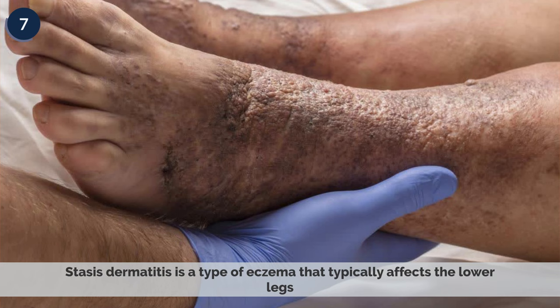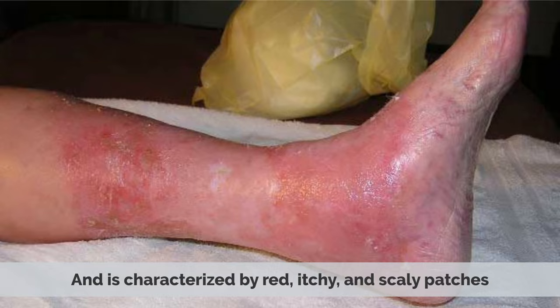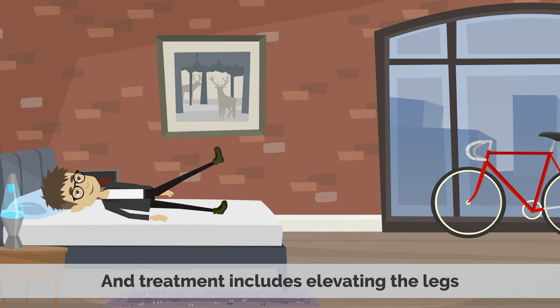7. Stasis Dermatitis. Stasis dermatitis is a type of eczema that typically affects the lower legs and is characterized by red, itchy, and scaly patches. This type of eczema is often caused by poor circulation in the legs, and treatment includes elevating the legs, wearing compression stockings, and using topical medications.